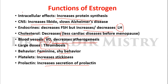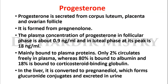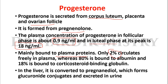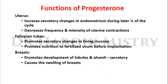Progesterone is secreted from the corpus luteum, placenta, and ovarian follicle. It is formed from pregnenolone. The plasma concentration of progesterone in the follicular phase is about 0.9 nanograms per mL, and in the luteal phase its peak is 18 nanograms per mL. Progesterone is mainly bound to plasma proteins — only 2% circulates freely, 80% is bound to albumin, and 18% is bound to corticosteroid-binding globulin. In the liver, it is converted to pregnanediol, which forms glucuronide conjugates and is excreted in the urine.